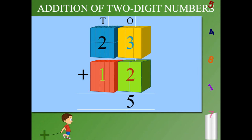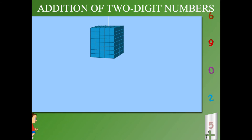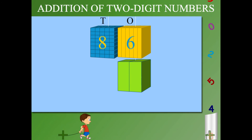And 2 tens plus 1 tens is 3 tens, making it 35. Look at this one. It is 86 plus 2.